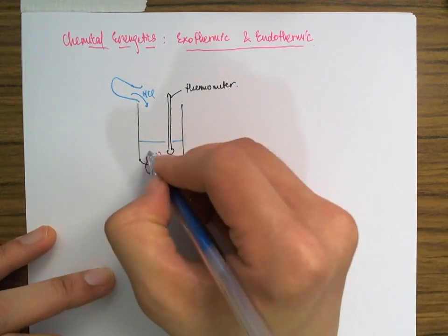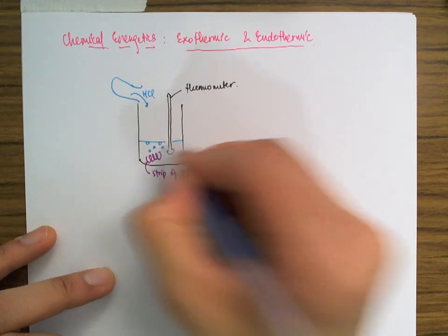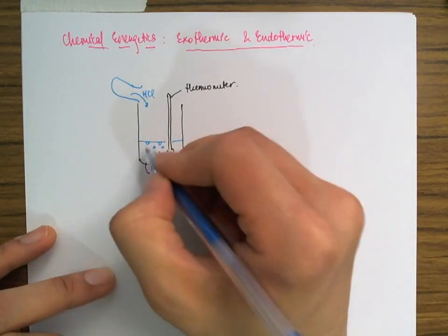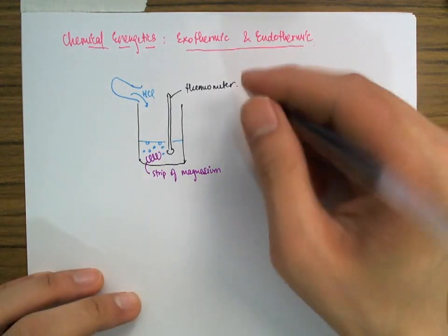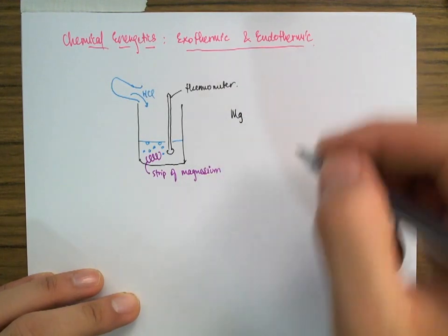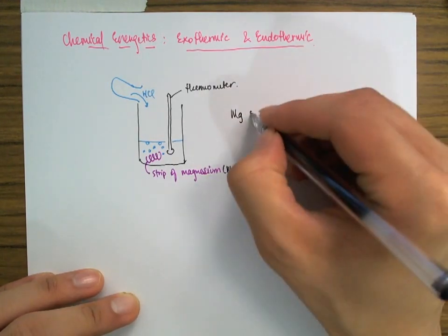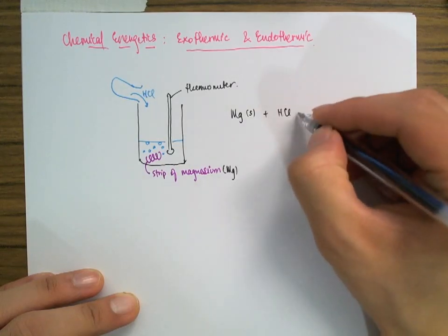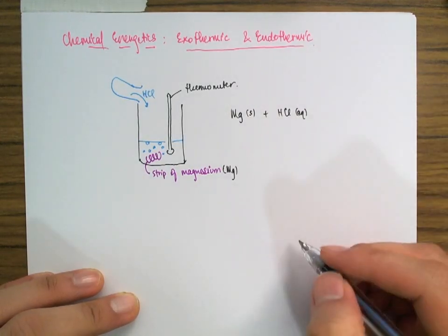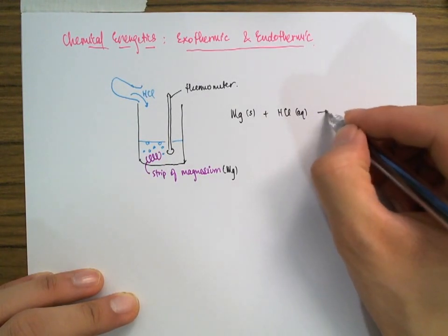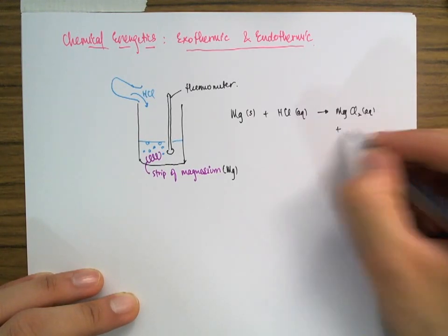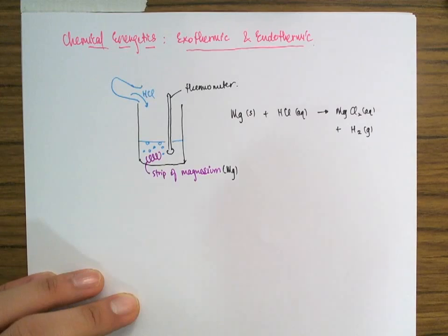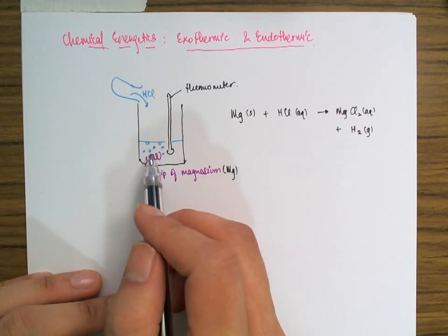As the reaction proceeds, I'll see some bubbles coming off. What's happening is that the magnesium is reacting with the aqueous hydrochloric acid to form magnesium chloride (aqueous), and in the process giving off some hydrogen gas. That gas you see coming off — that's the hydrogen gas.